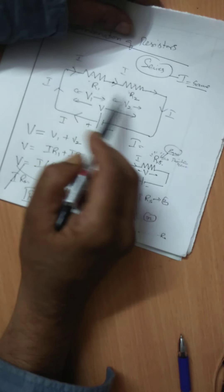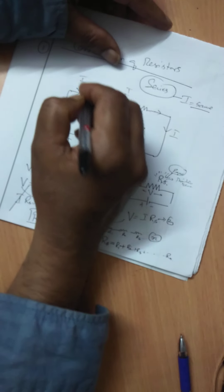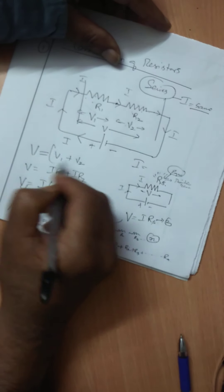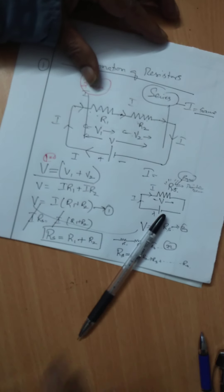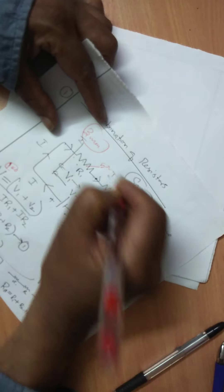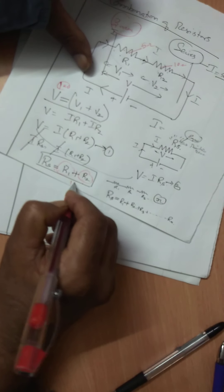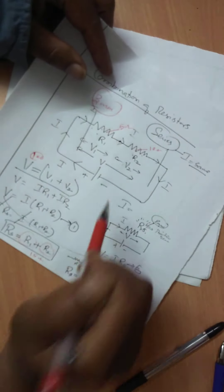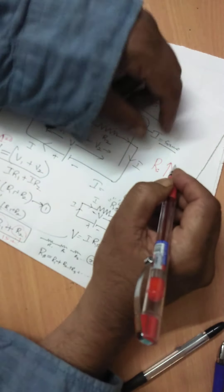If V1 and V2 are the potential differences across R1 and R2 in series, the potential difference across the combination equals V1 plus V2. This is a three-mark question. The effective resistance increases in series — for example, 5 ohm plus 10 ohm gives 15 ohm. Therefore, effective resistance increases in a series combination.